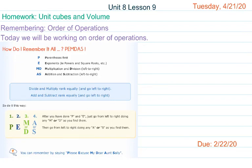Hi guys, today is April 21st and we are going to be working with volume today and on the remembering side you're going to be working again with order of operations and you are also going to be working to find the perimeter and area of a rectangle.